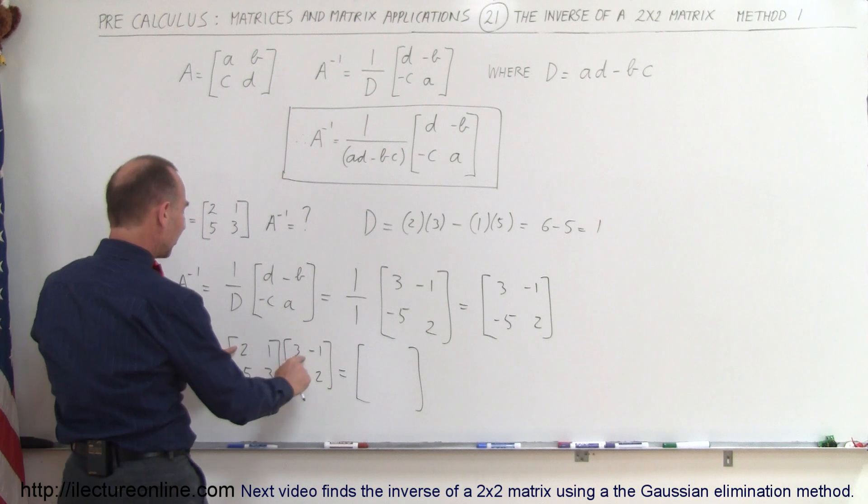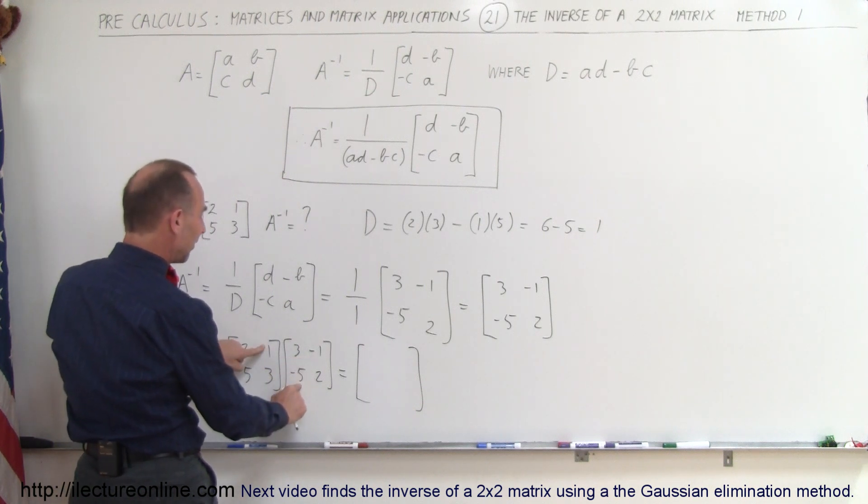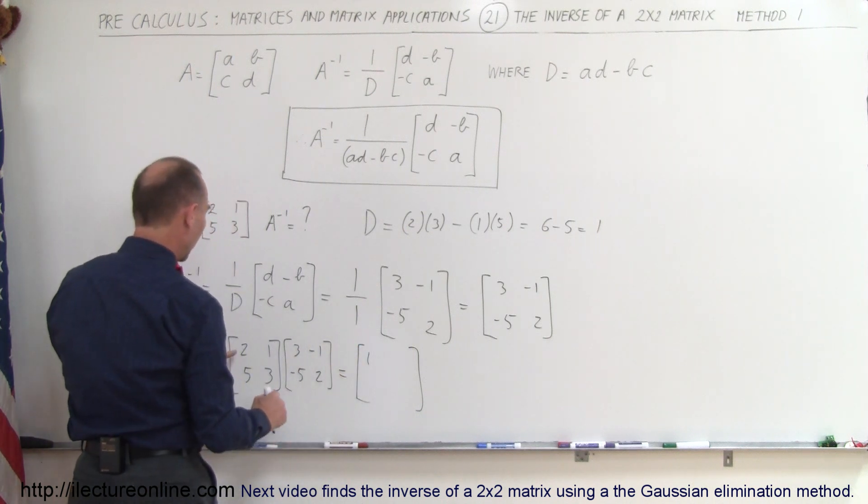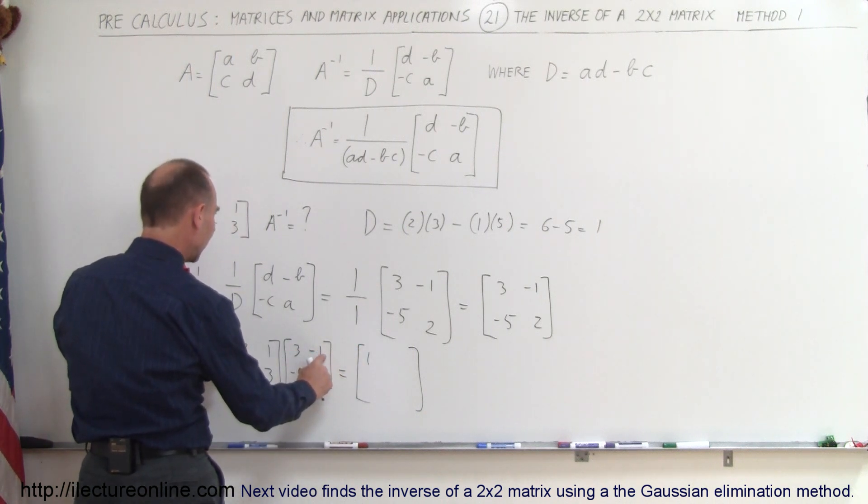So here we get 2 times 3 is 6, and 1 times the negative 5 is minus 5, 6 minus 5 gives me a 1. 2 times the negative 1 is a negative 2, and 1 times 2 is a positive 2, negative 2 plus 2 gives me a 0.